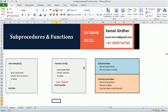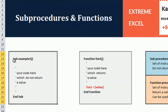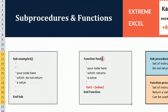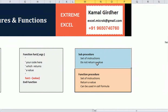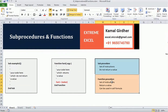To quickly revise: the syntax of a sub procedure is 'Sub [name]()' followed by a set of instructions and 'End Sub'. For a function: 'Function [name]([arguments])' followed by instructions, and before 'End Function' you return the value using '[FunctionName] = value'. In summary — sub procedures are a set of instructions that do not return a value; functions are a set of instructions that return a value and can be used in cell formulas.